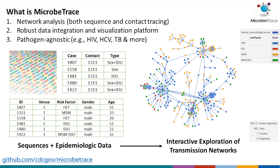The two types of data sets we commonly work with are line lists, or just lists of individuals where each person represents a line. Here towards the bottom of this slide we have an example of a line list, so individual one is ID 1807, we have some information about that individual, and the next line is another individual.